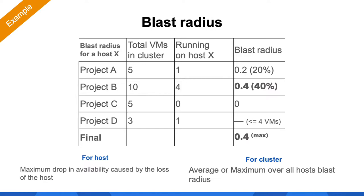For the whole host X, the blast radius is the maximum blast radius for any project running on that host — in this case it's 0.4 or 40%. In Workday, we don't calculate blast radius for projects with 4 or fewer VMs in the cluster, which is why Project D doesn't have a blast radius. To calculate the blast radius for the whole cluster, we use the average and the maximum blast radius for all individual hosts. Note that a lower blast radius is better, since it measures the drop in application availability.